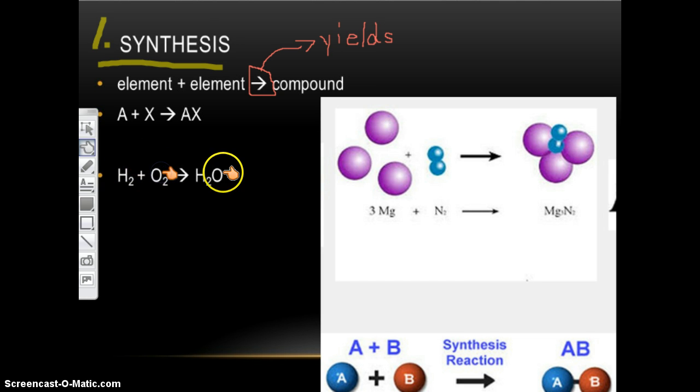You don't need to worry about that part right now. But just so you know, it's only one element. So one element plus one element makes one compound. You can show it in the bubble format down here. So A plus B yields AB, now they're bonded together.